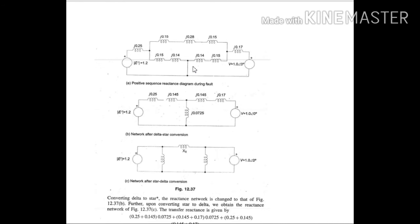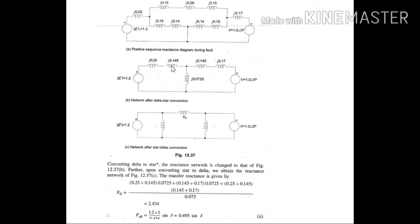So move next. After converting from delta to star, we obtain these values like this. Now again converting this star to delta using the same conversion formulas, we obtain the equivalent reactance that is required. This transmission line reactance is required for calculating the critical clearing angle.